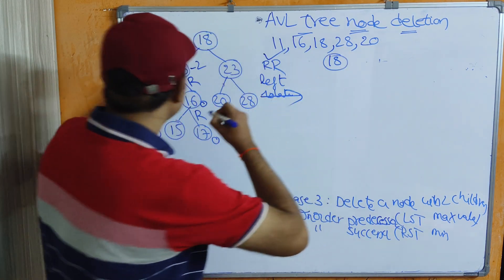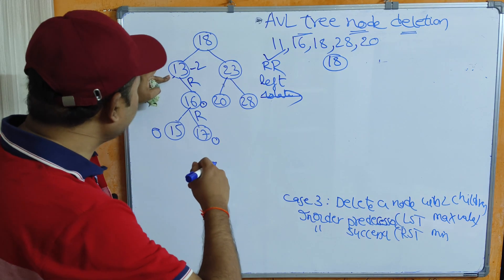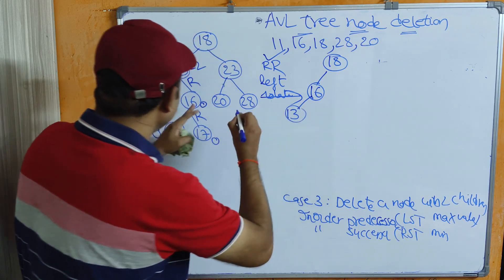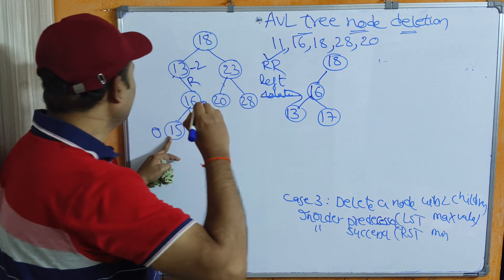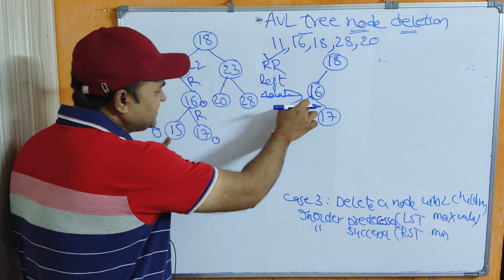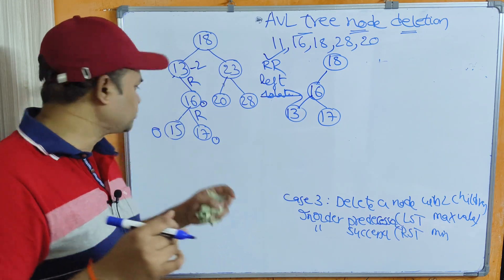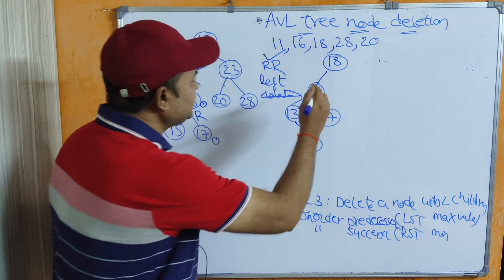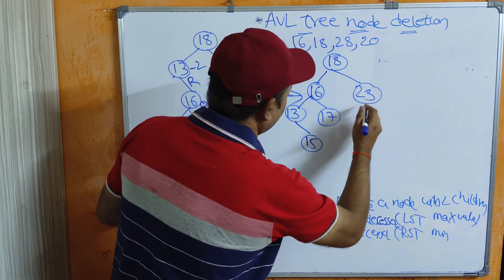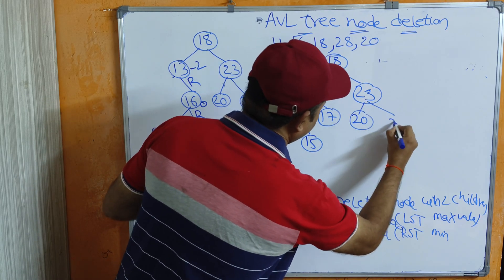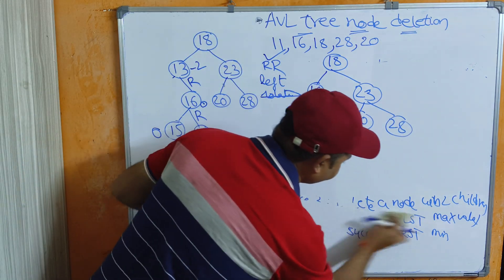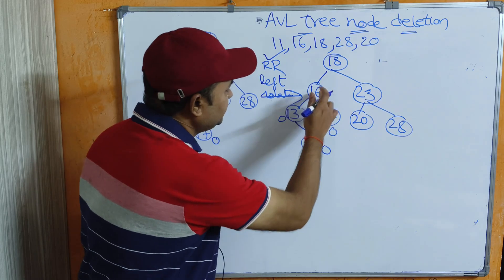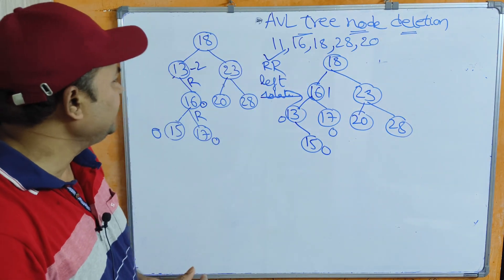After the left rotation, 13 is the left child and 17 is the right child of 16. What about 15? Since 15 is less than 16 and greater than 13, it will be attached as the right child of 13. There is no change in the right subtree — 23, 20, 28 remain. Now the balance factors are: 15=0, 13=1 (with 15 as right child), 17=0, 16=0. Everything is balanced. Node 11 is successfully deleted.